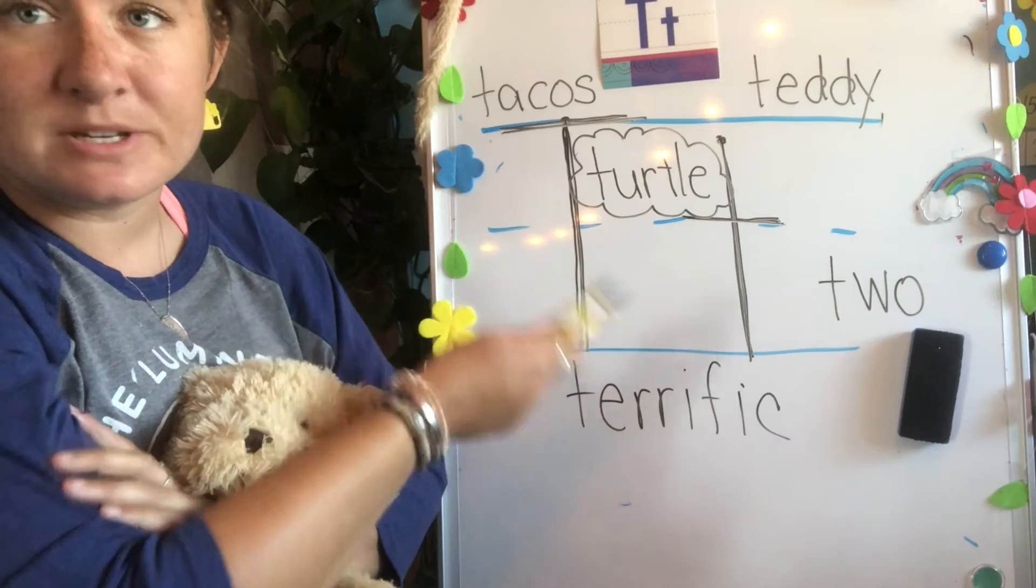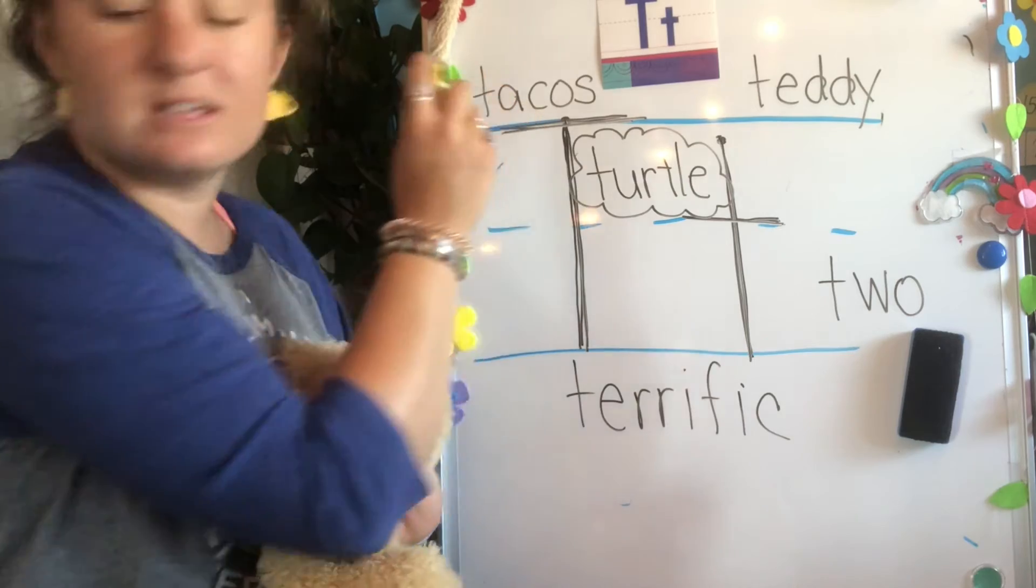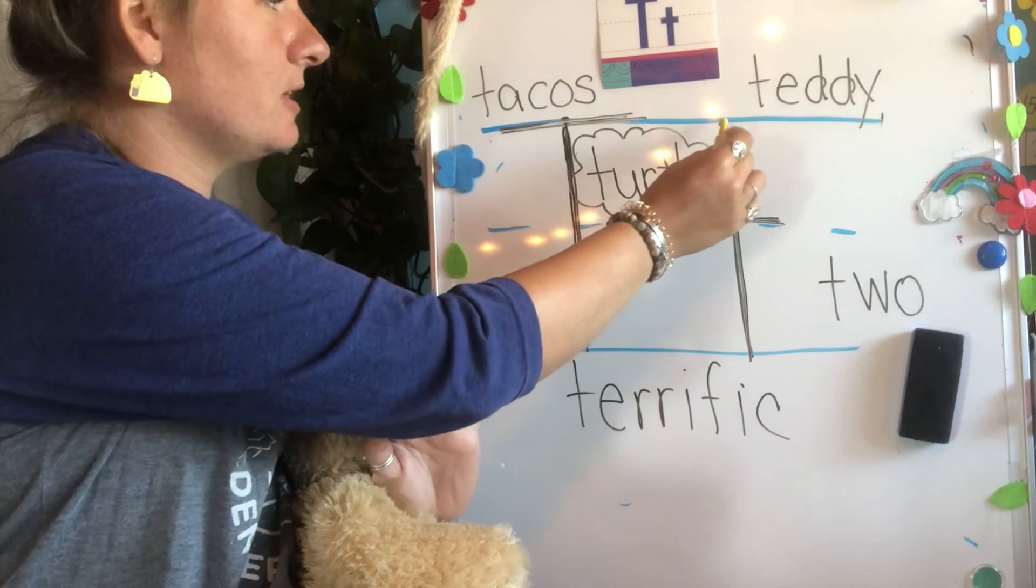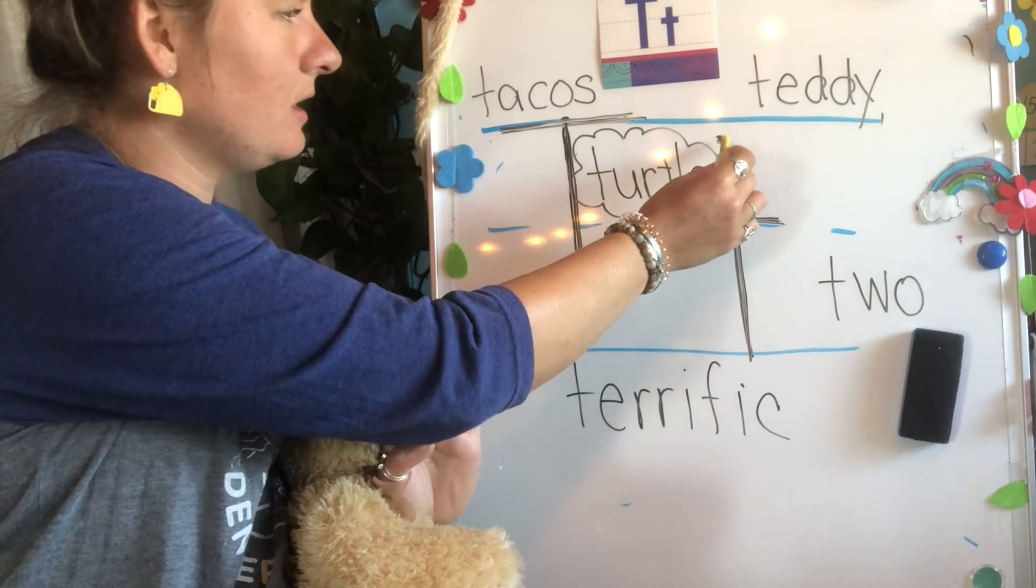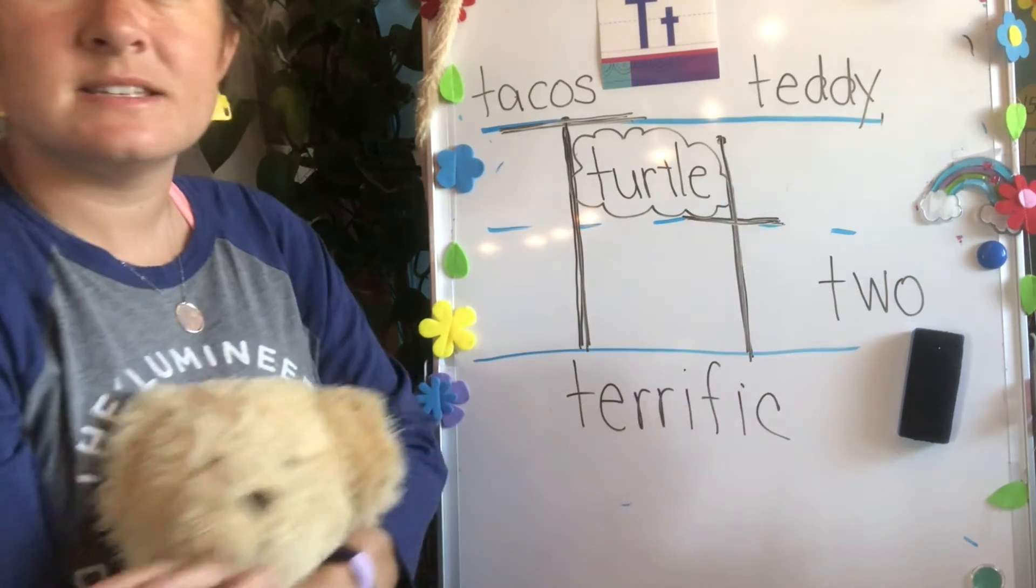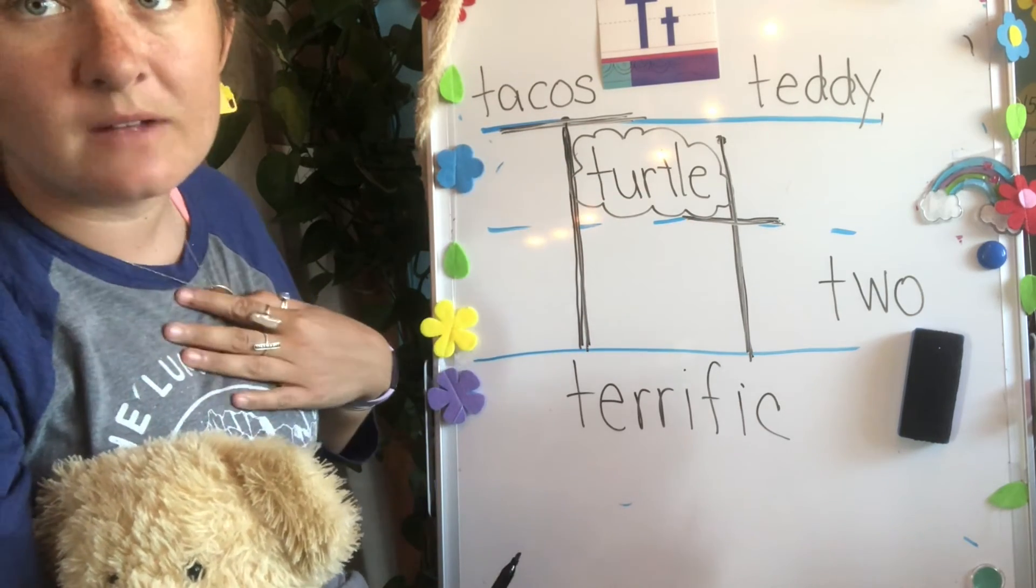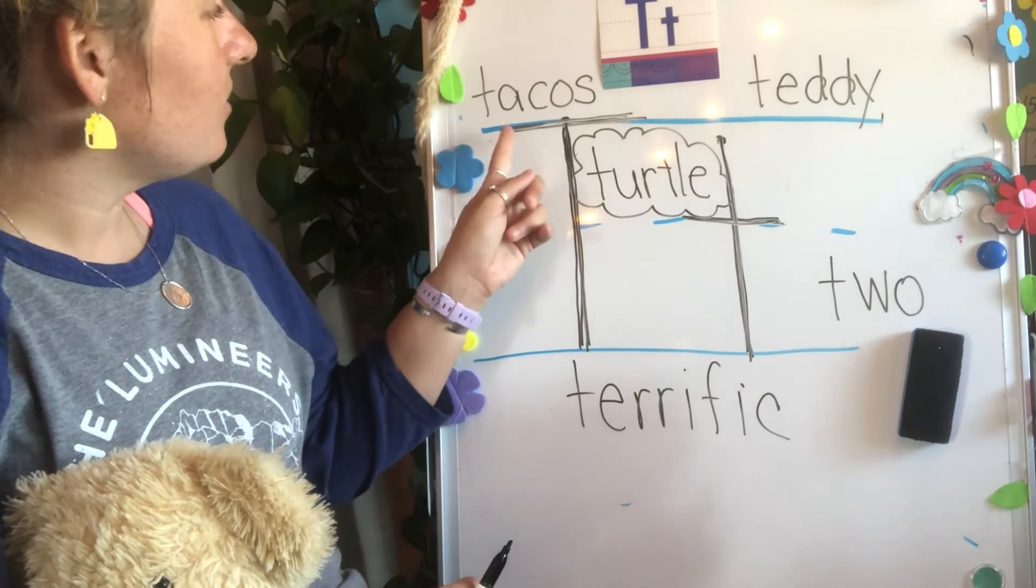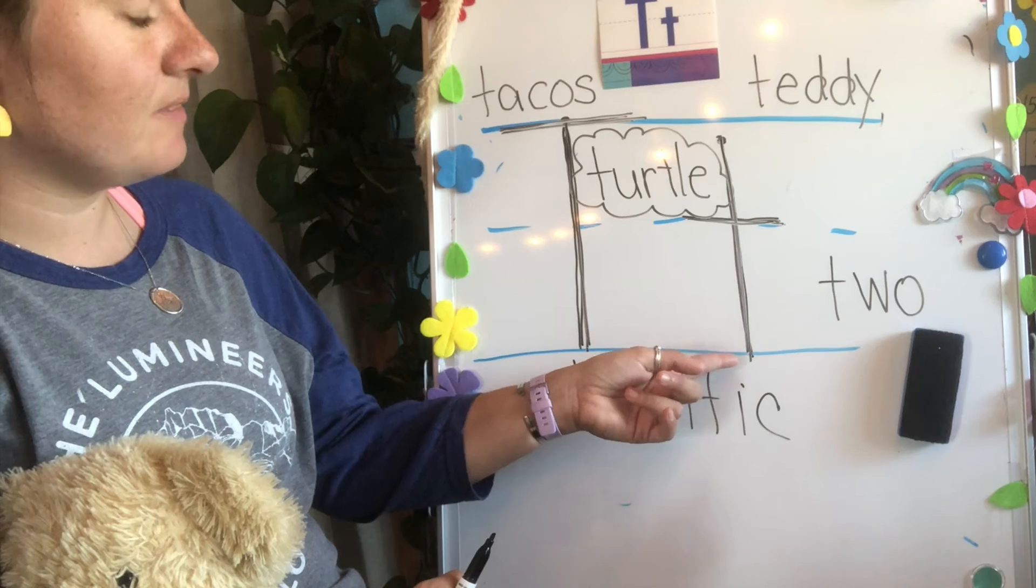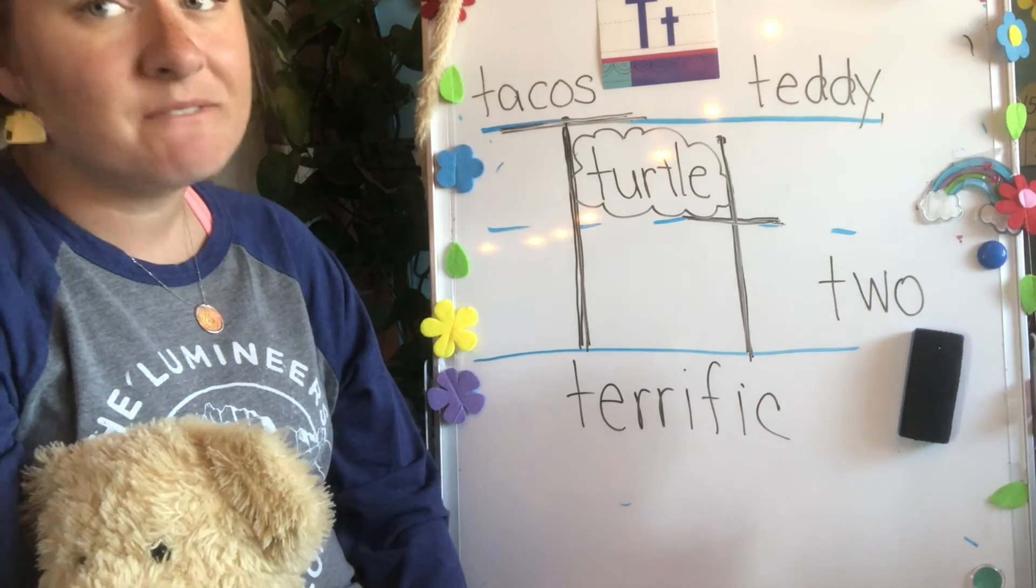Let's repeat what our private speech is again for our uppercase T and lowercase T. Uppercase T is top, down, across. Start a little bit below the top line and go down, across. It's the same private speech but you put the across line in a different spot. You see how for the uppercase T, the across line is at the top and then for the lowercase T, the across line is in the middle. I know you can do it. Alright boys and girls, have fun!